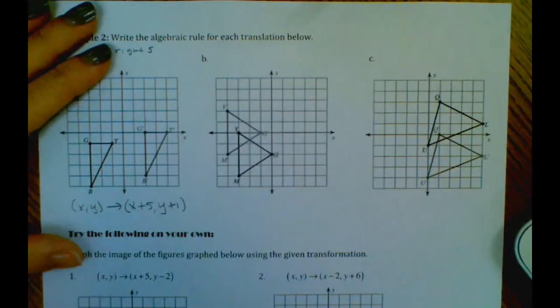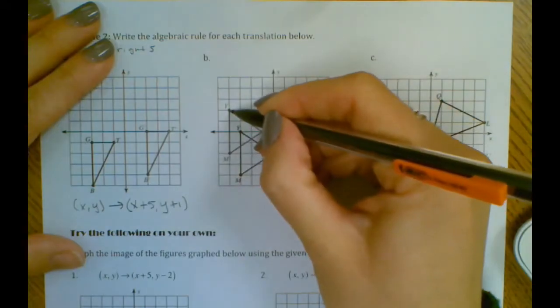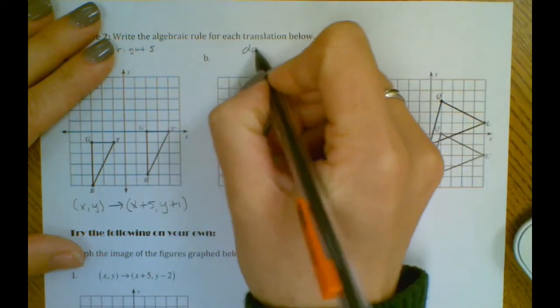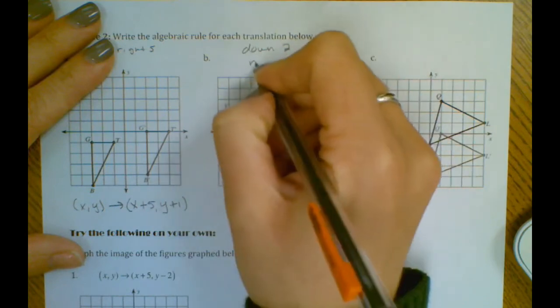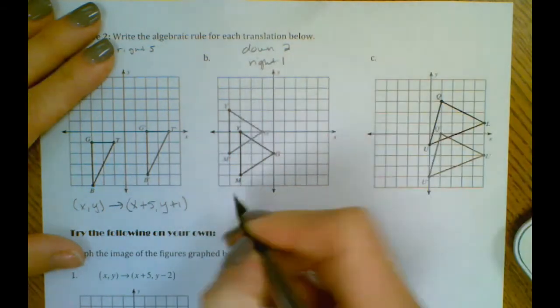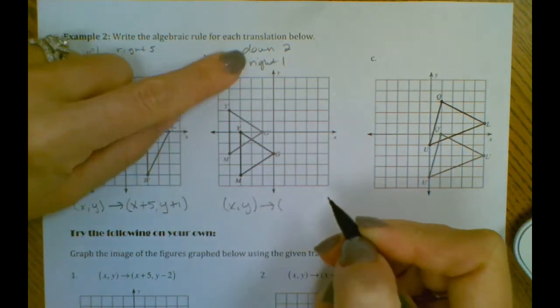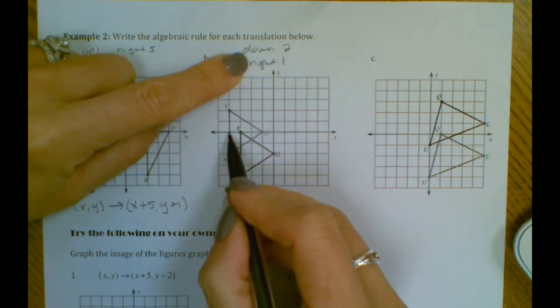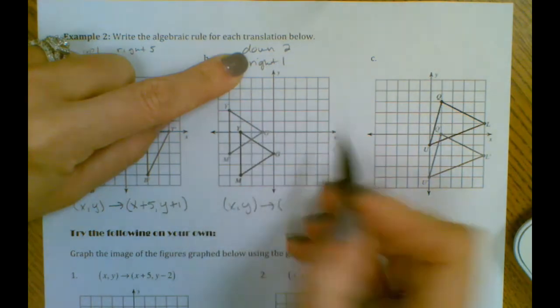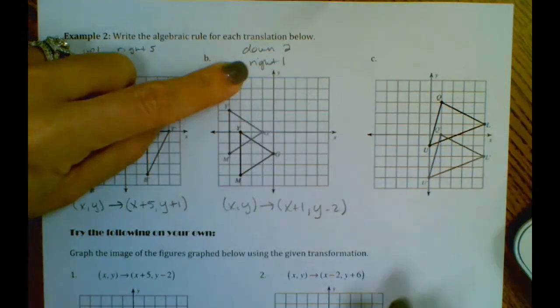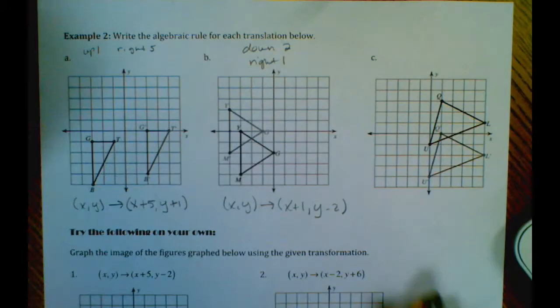Okay, for B, if we look at our Y's, we moved down two and right one. So right one would be addition because we're moving towards positive X's. And then Y down two would be minus two because we subtracted two on our Y.